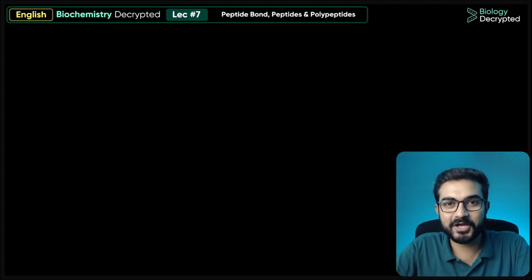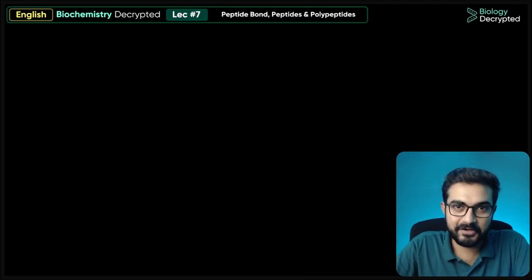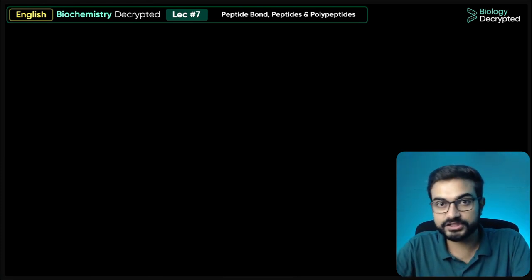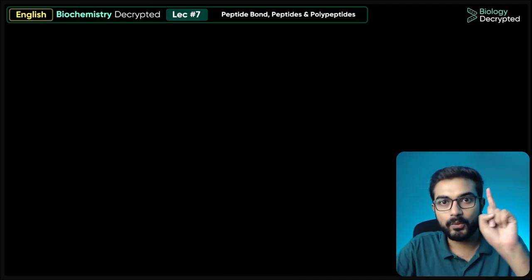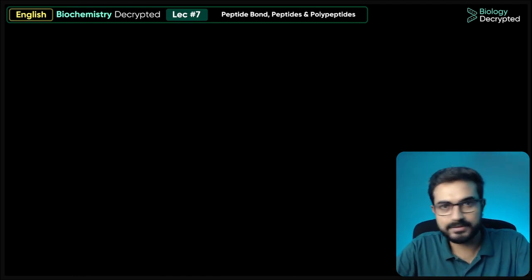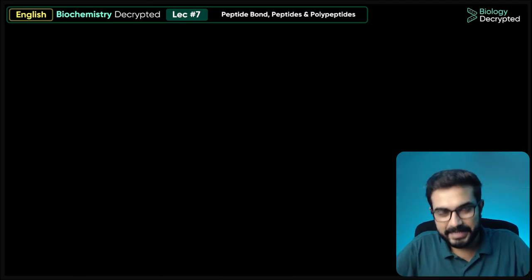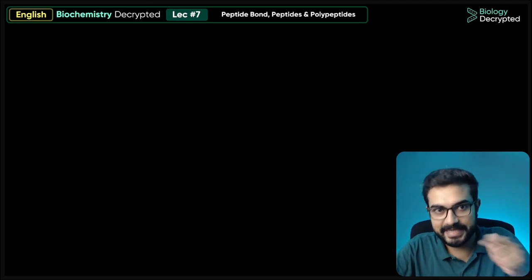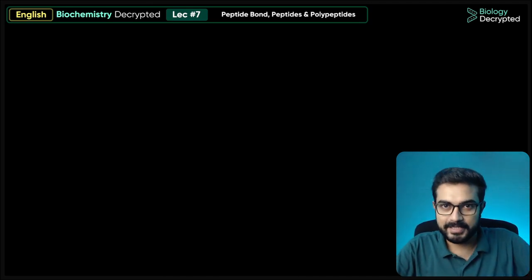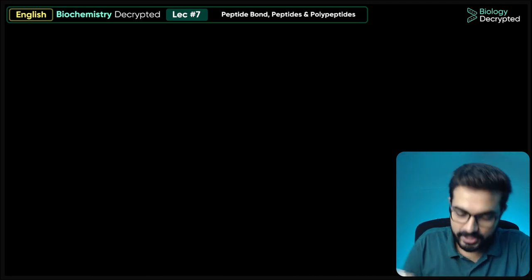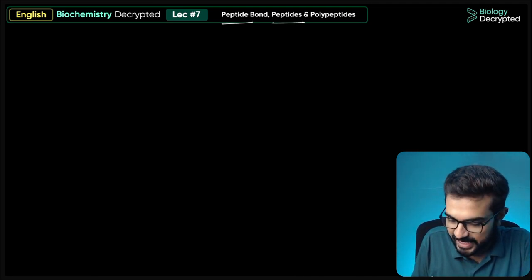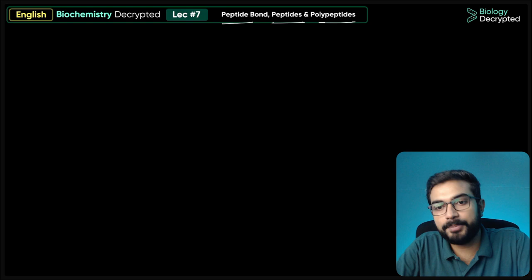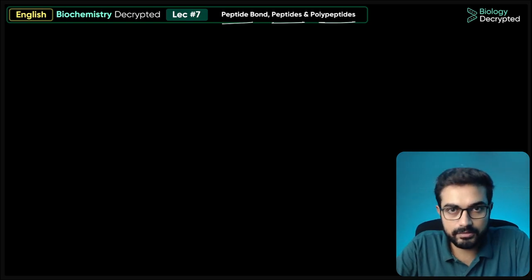Hello dear students, welcome to Biology Decrypted. This series of Biochemistry Decrypted is ongoing and six lectures have been covered so far. If you haven't watched the previous lectures, you'll find the links compiled in a playlist — the link is on the 'i' button. Please watch all the lectures and then come to this lecture. This is lecture seven: peptide bond, peptides, and polypeptides.